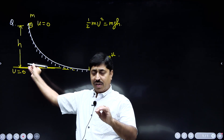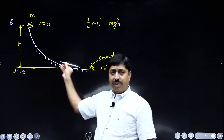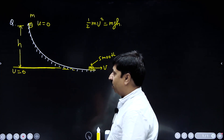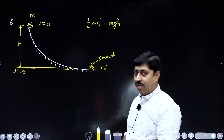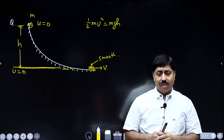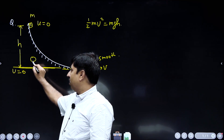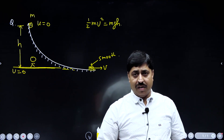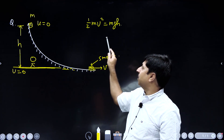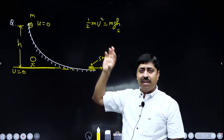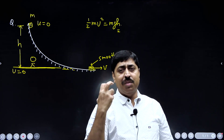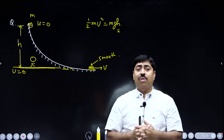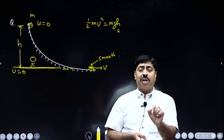We will take this horizontal level as the reference level for measuring potential energy, which means when the block reaches here its potential energy is 0, and when it is at height h its potential energy is mgh. The block is released from here, it slides down and gains speed. When it reaches the bottom its speed is let us say v. This whole thing was observed by an observer standing on the ground. If you ask this observer why the block has gained kinetic energy, he will say that the block has lost gravitational potential energy equal to mgh, and that is why it has gained kinetic energy — the gain in kinetic energy must be equal to mgh. In other words, he can also say that gravitational force has performed work on this block, and the work done by gravitational force is mgh.